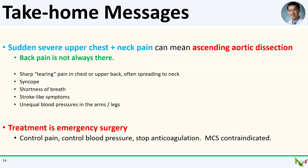The principal take-home message from this case is to consider ascending aortic dissection in a patient with sudden onset severe upper chest and neck pain, especially with an ECG that is not showing a STEMI. Back pain is not always present. We discussed how ascending aortic dissection might present like a STEMI, pericardial tamponade, or stroke, depending on what vessels and structures are compromised. It is critical to control pain and blood pressure quickly. Mechanical circulatory support is contraindicated. Treatment is emergency surgery.